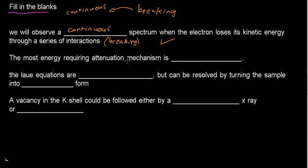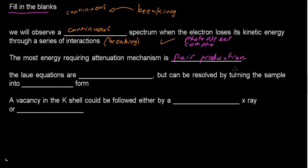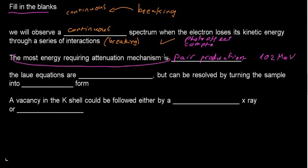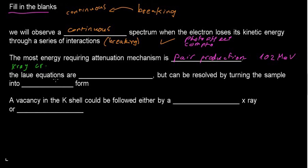Next: 'The most energy-requiring attenuation mechanism is ___.' We know three attenuation mechanisms: the photoelectric effect, the Compton effect, and pair production. Pair production is the most dramatic — it features annihilation, positron-electron pairs, gamma rays, and requires 1.02 MeV calculated by Einstein's energy-mass equivalency formula. Pair production is really standing on its own, so it's the answer.